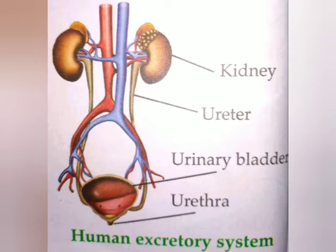Kidneys are bean-shaped structures and act like filters. They filter the blood and collect harmful waste such as urea and excess salts from the body. Two tubes called ureters carry these wastes from the kidneys to the urinary bladder.